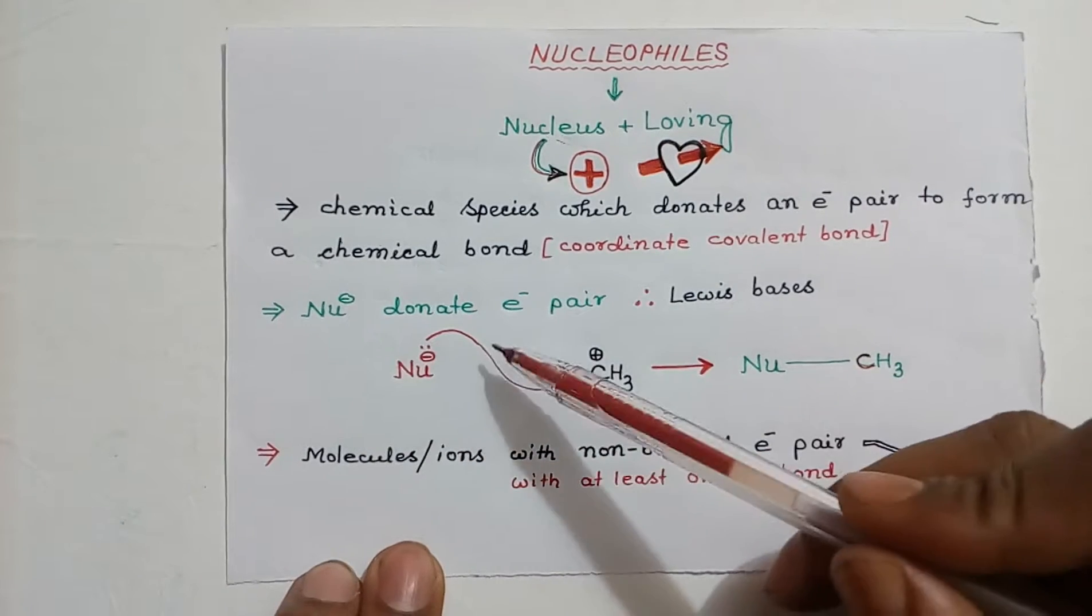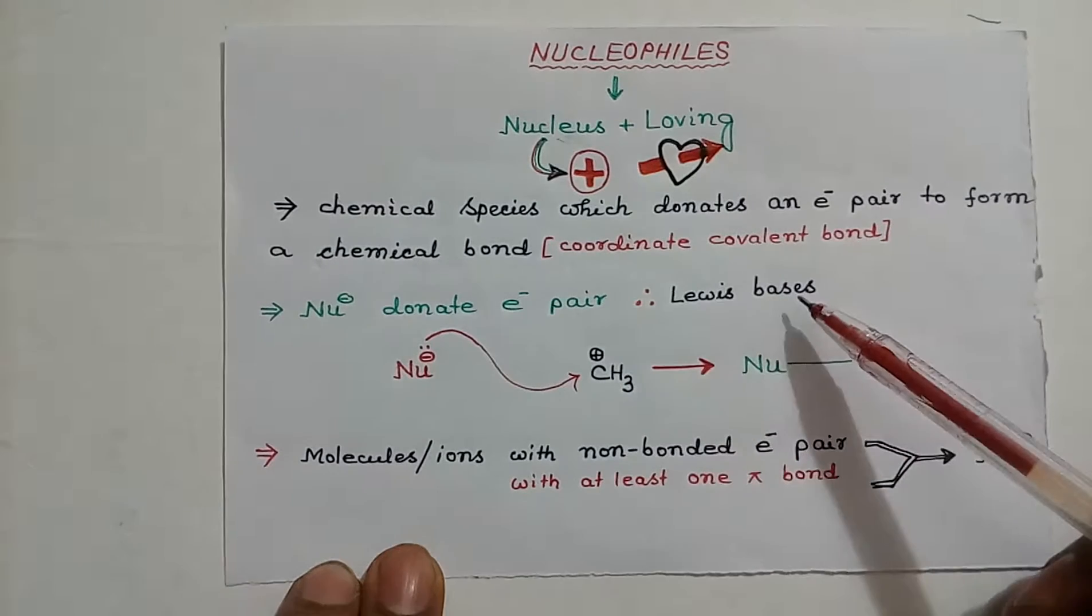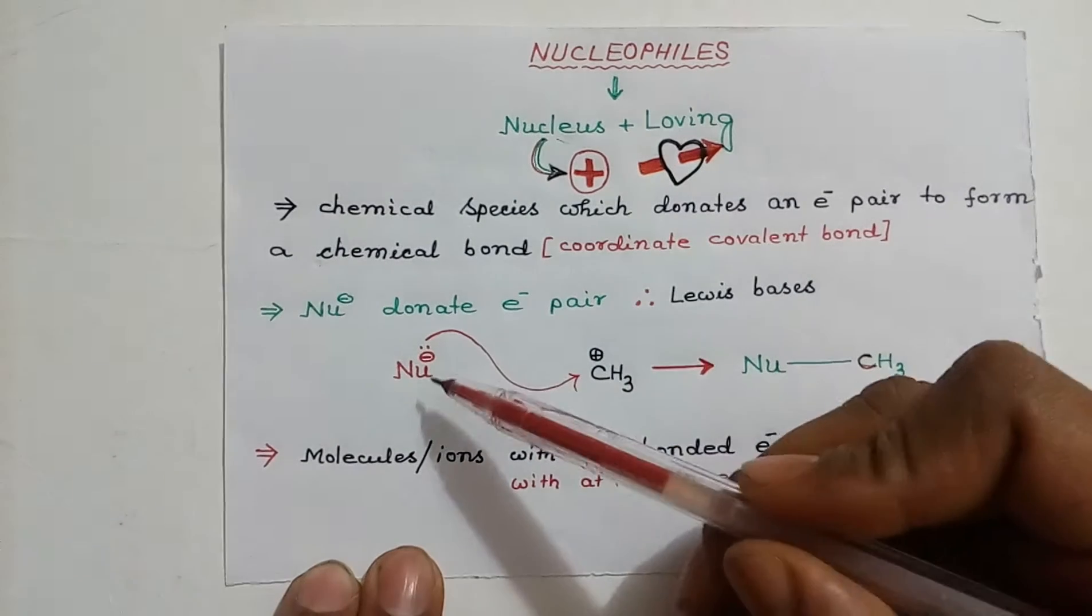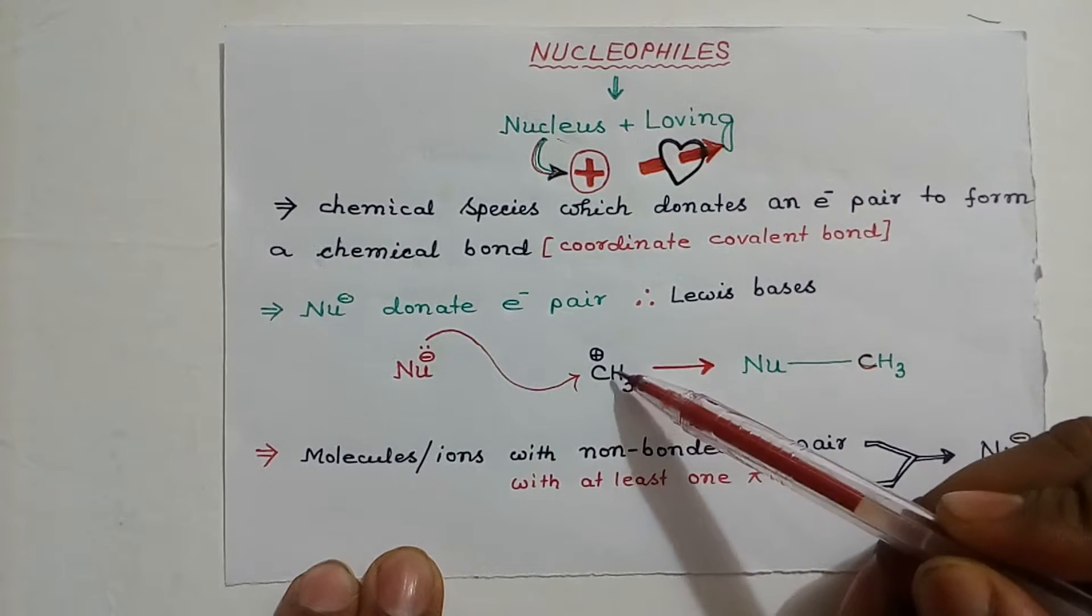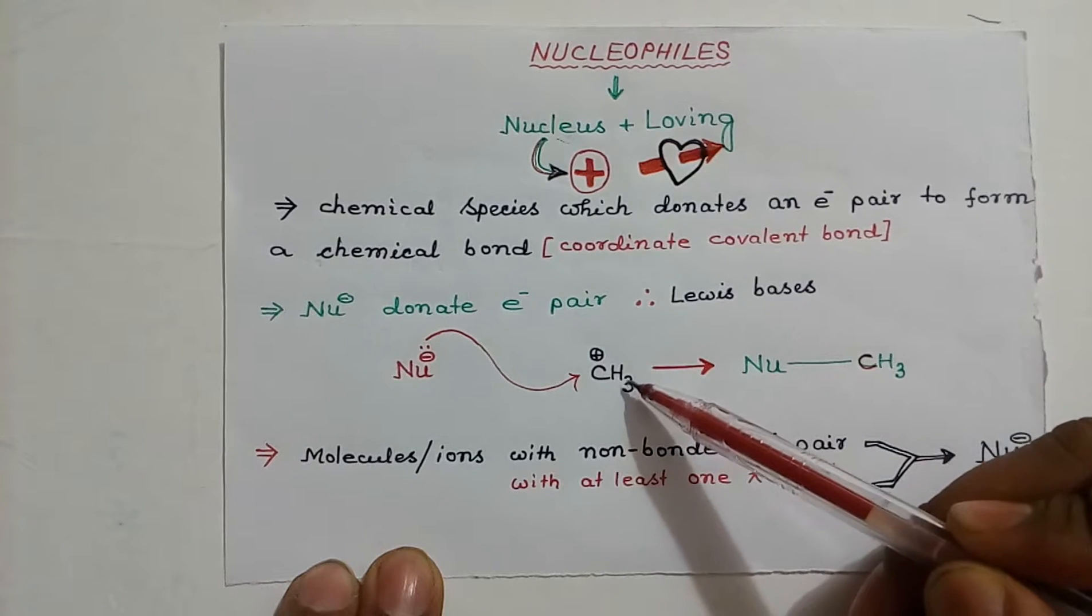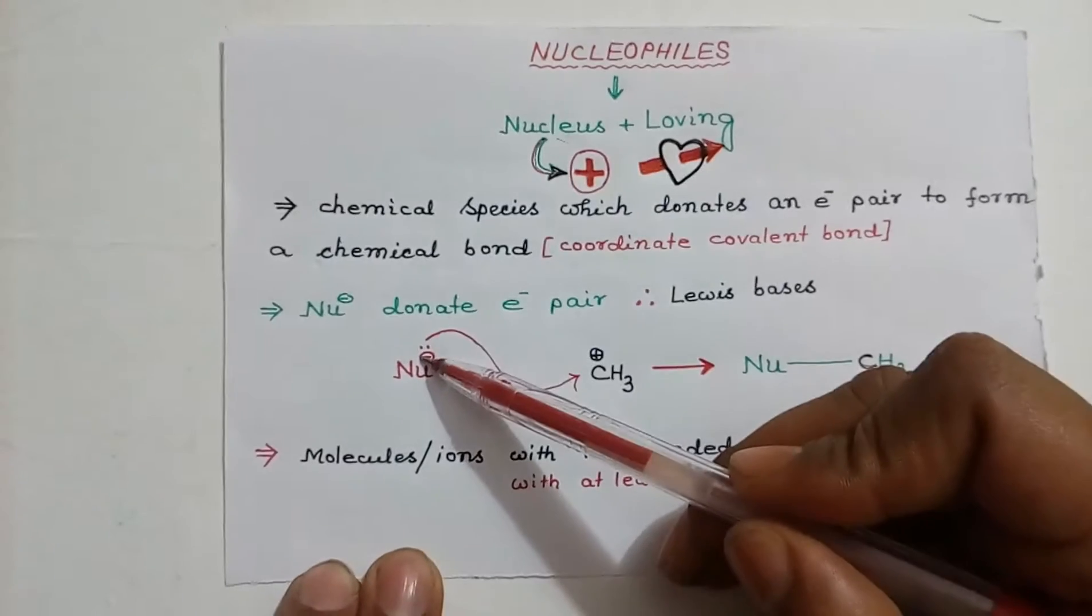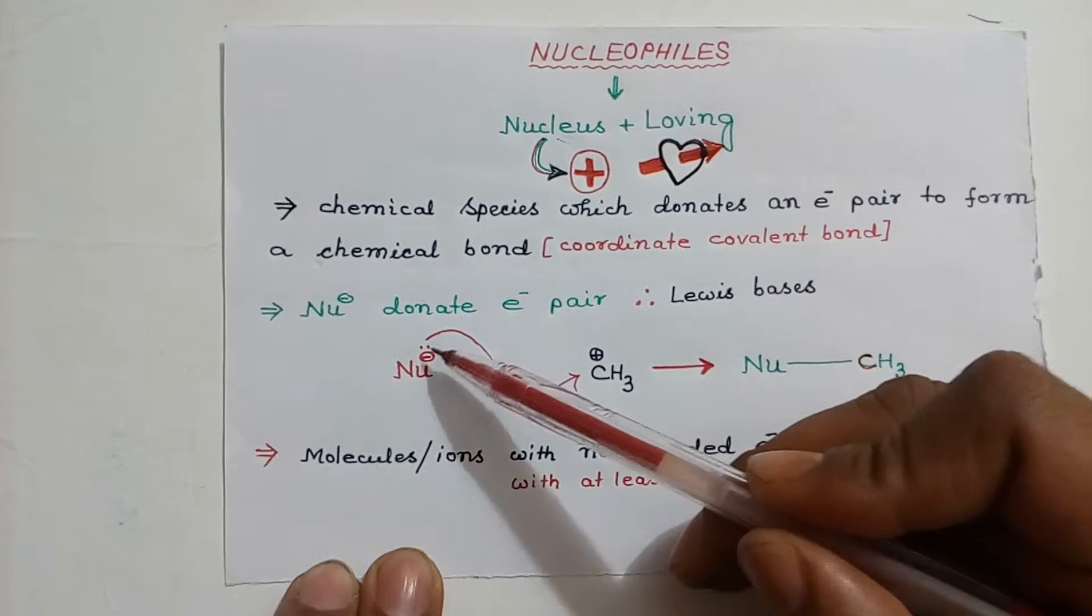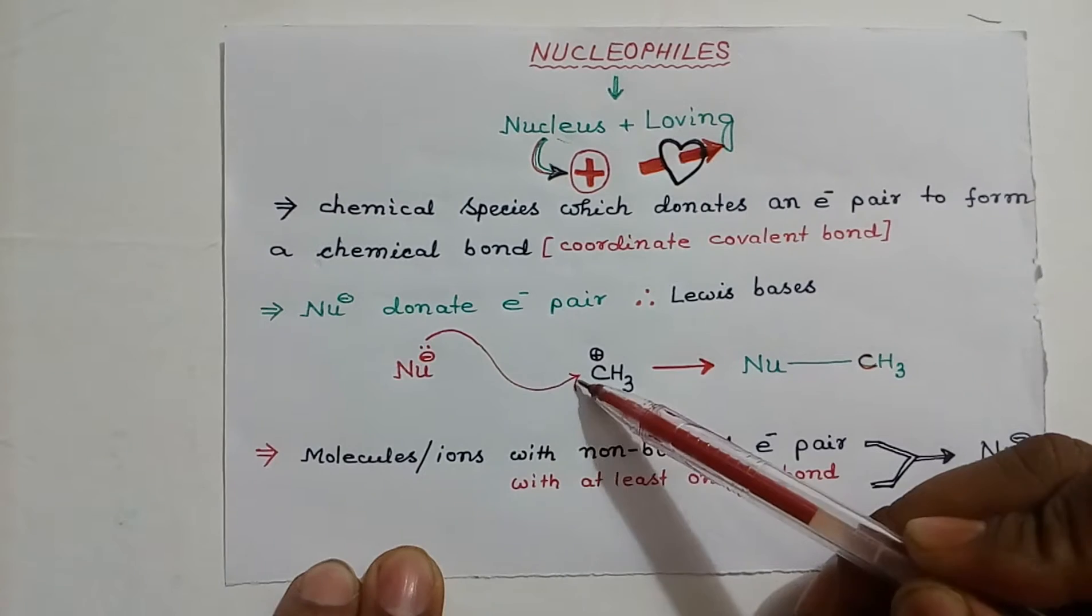Nucleophile donates its electron pair, thus acting as a Lewis base. Take this nucleophile and another species with a positive charge. So this species no doubt is electron deficient. Nucleophile being electron rich, it will donate its lone pair to form a coordinate covalent bond.